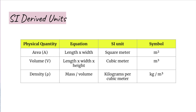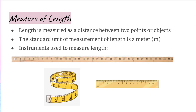Today we will be focusing on how scientists measure length, mass, temperature, and volume. Length is measured as the distance between two points or objects. The standard unit of measurement of length is a meter, written as a lowercase 'm'. There are many instruments used to measure length: a meter stick, measuring tape, ruler, etc.